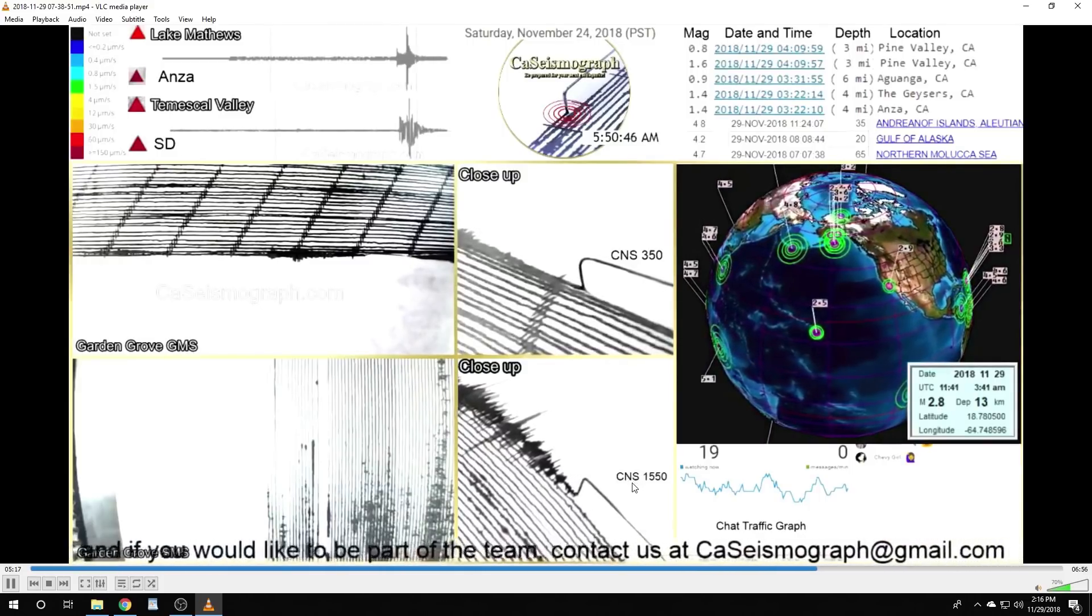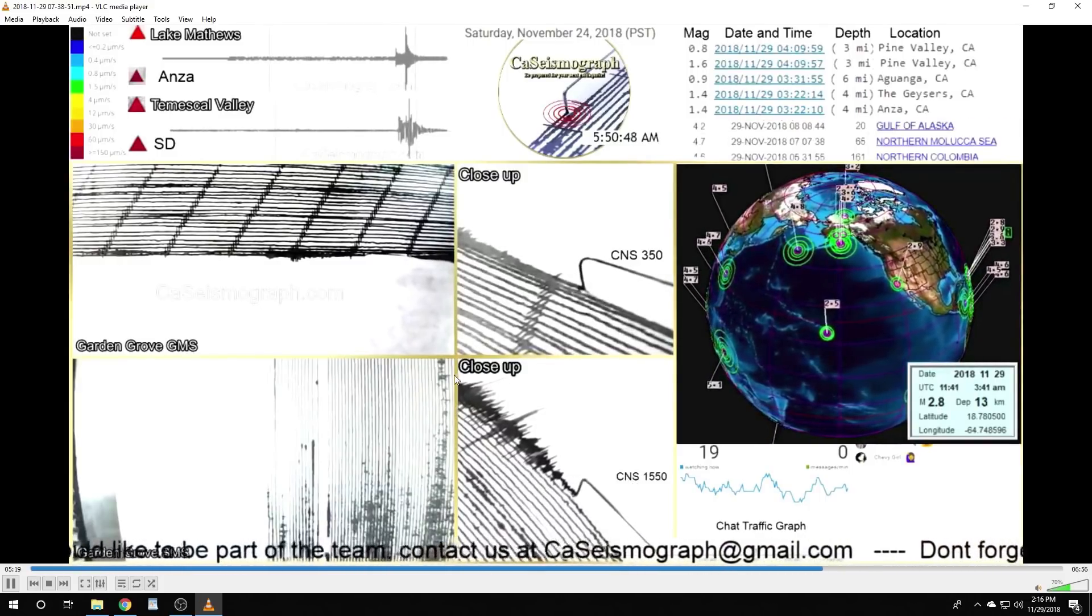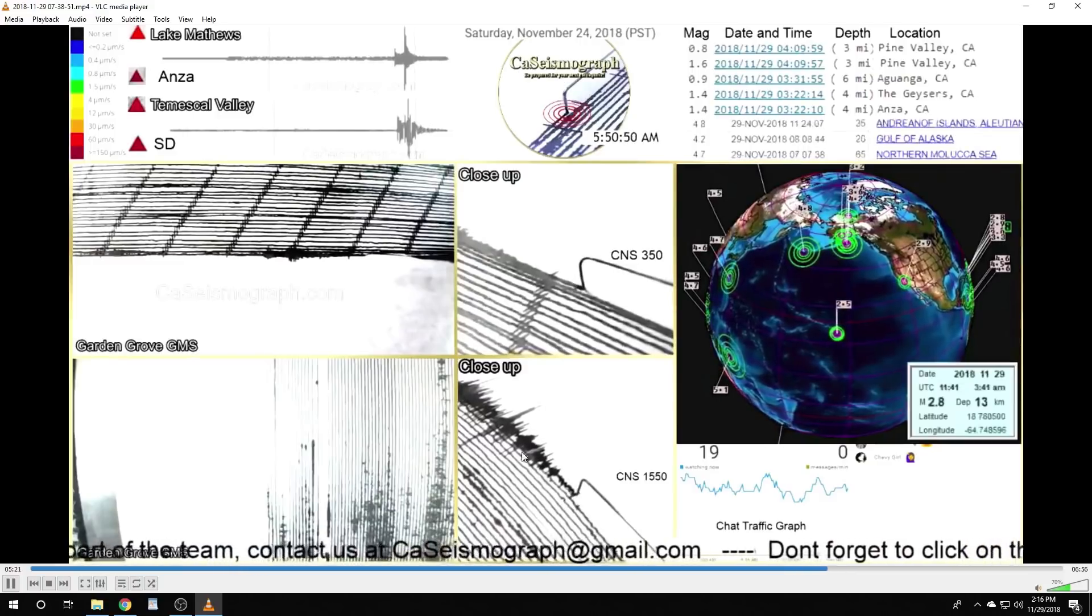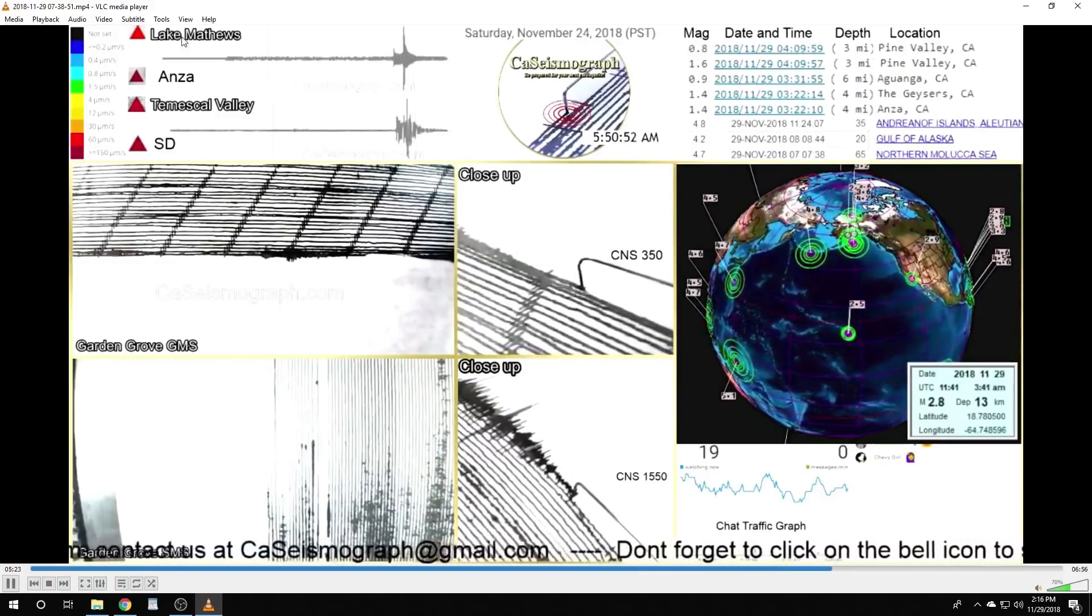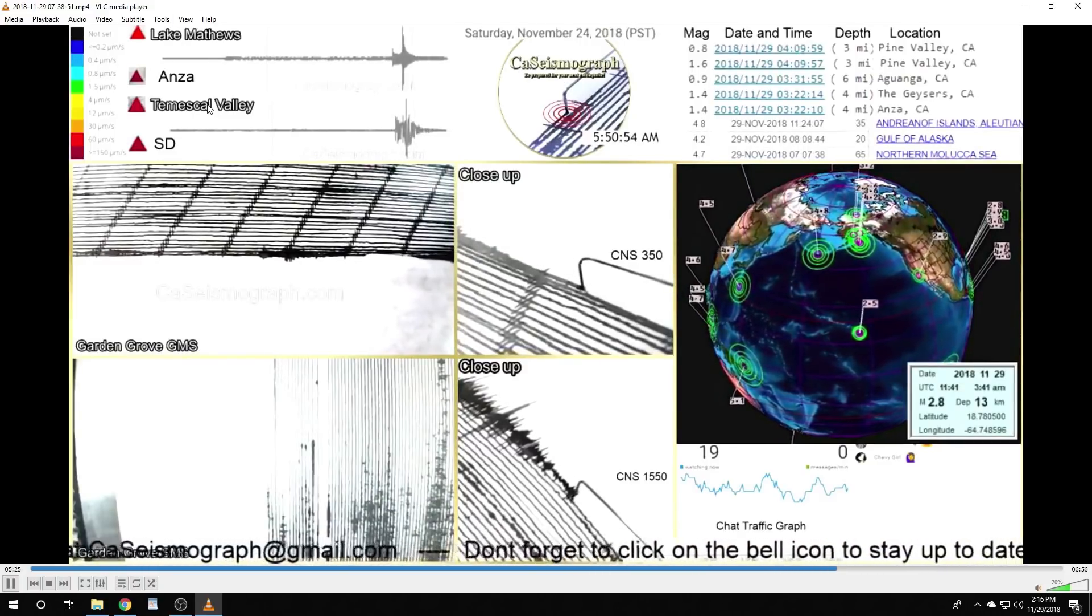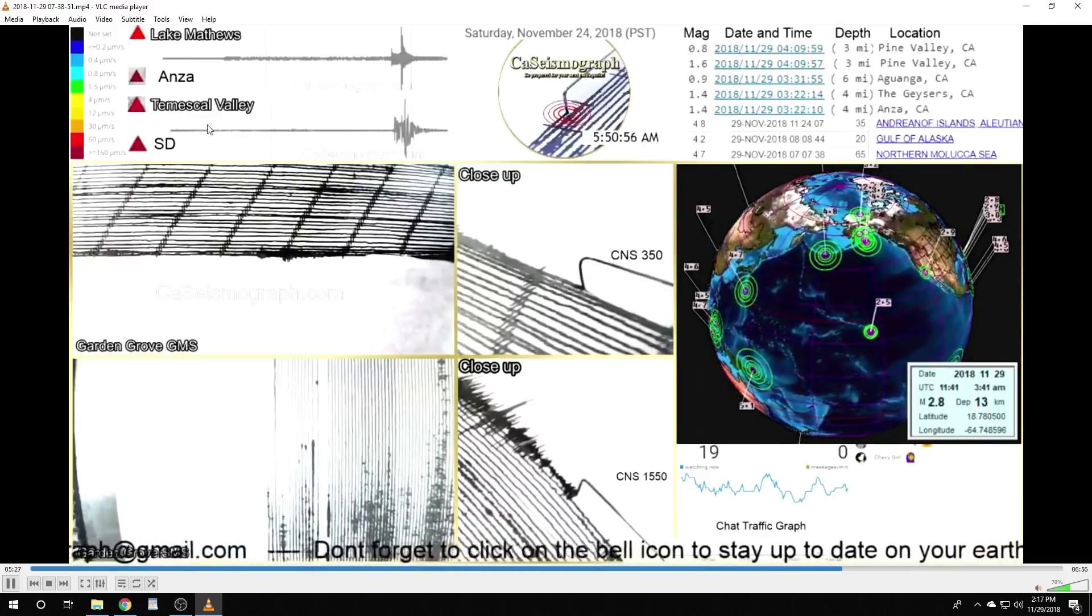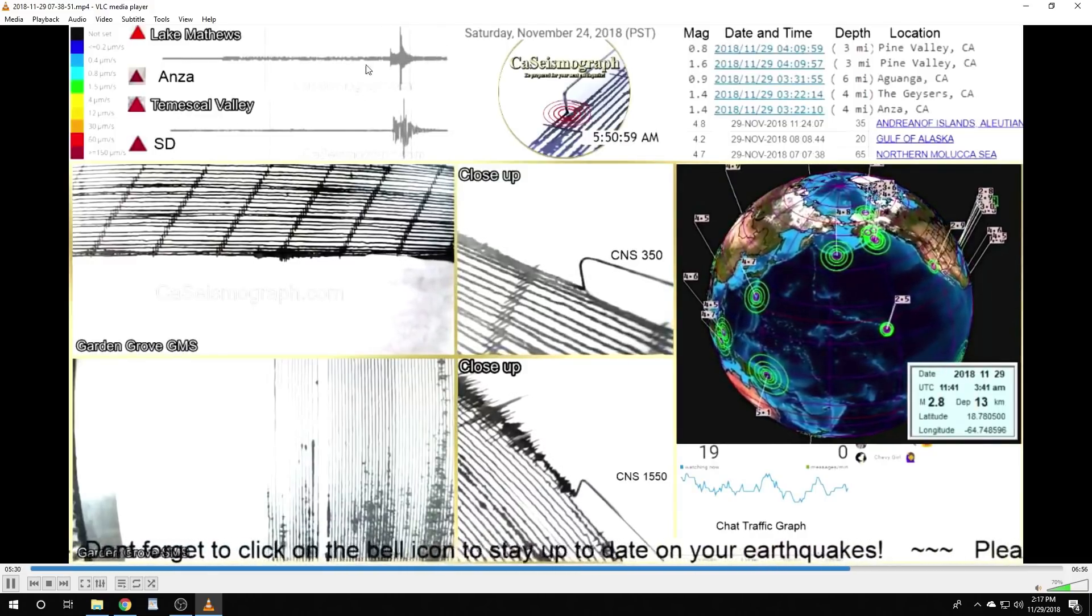That was our luck being able to get this nice graph out of this earthquake this morning. Obviously as you see, Lake Matthews, Yucaipa Valley, and San Diego all turned red and they both show up there very nicely too.